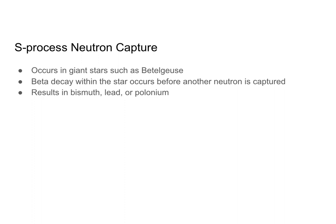S process neutron capture occurs in giant stars, like our old friend Betelgeuse. What happens is the star captures a neutron, and beta decay is able to occur within the star. That beta decay happens once, and then eventually the star captures another neutron and undergoes beta decay again. It continues to do this slowly over a very long period of time, because the key is that beta decay occurs before another neutron is captured.